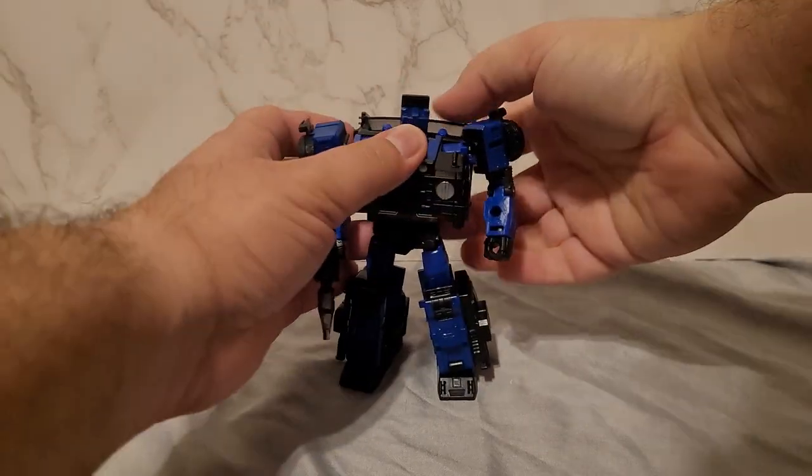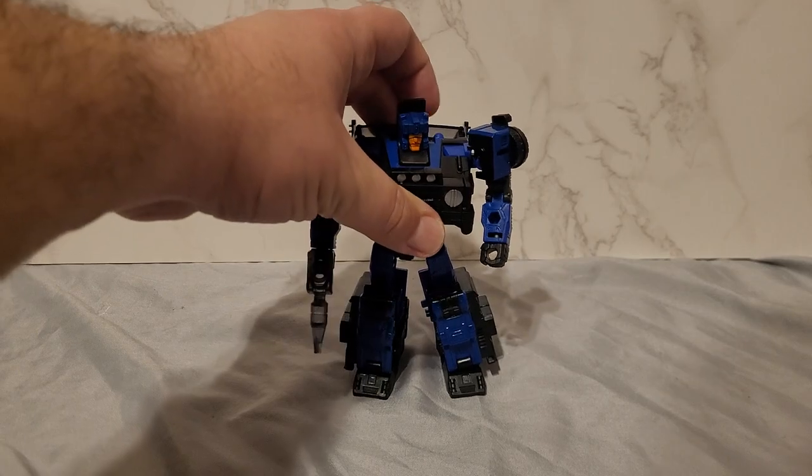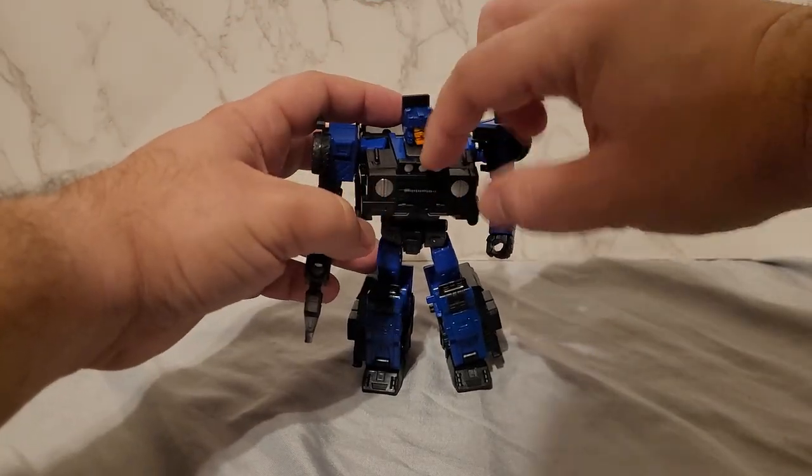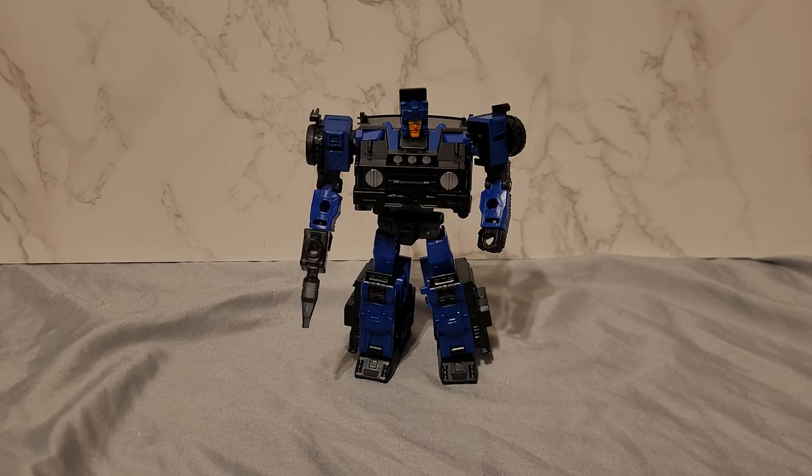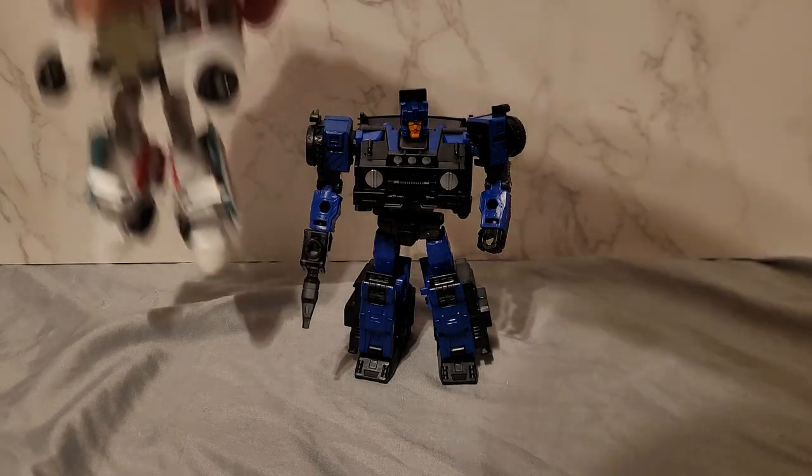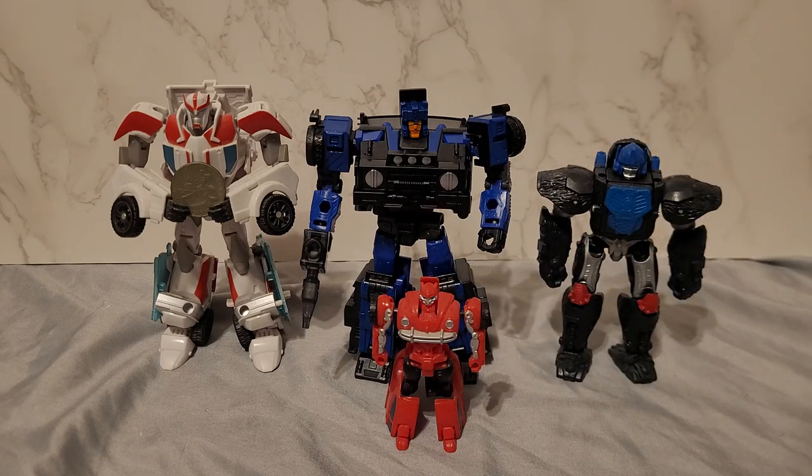Then these would be his secondary accessories, the cannons in the back. I'll give them that, it was pretty clever, the engineering for this, but I would have preferred if they did something else. Now on to size comparisons. Here we have Ratchet, Cliffjumper, and Primal.